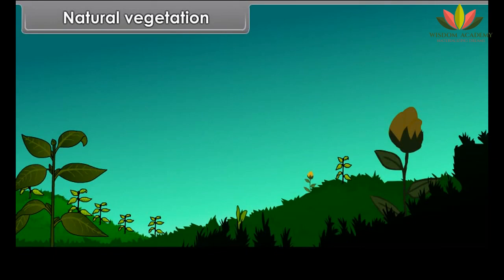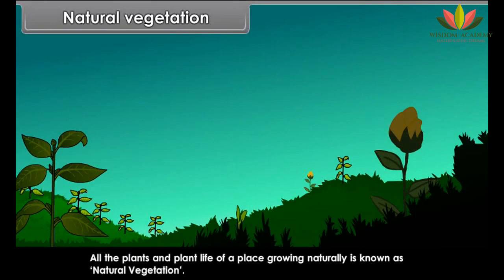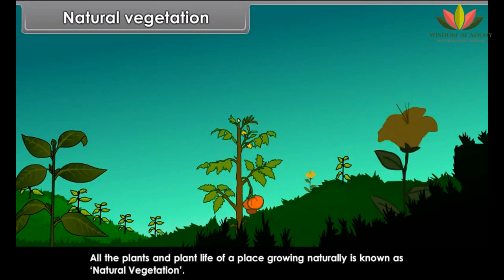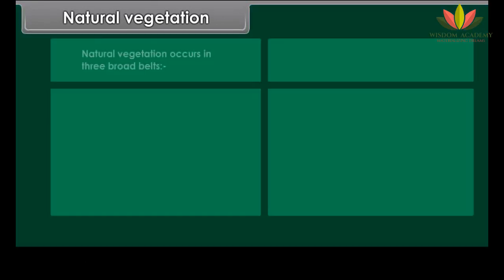All the plants and plant life of a place growing naturally is known as natural vegetation. Natural vegetation occurs in three broad belts: forests, grasslands and deserts.